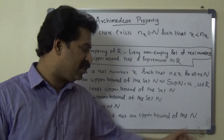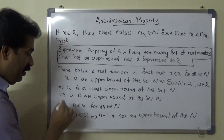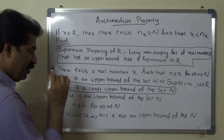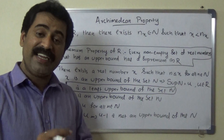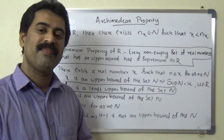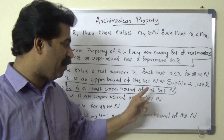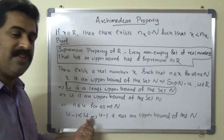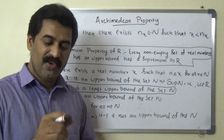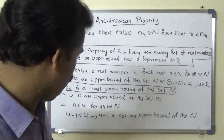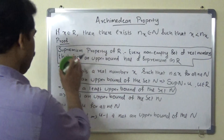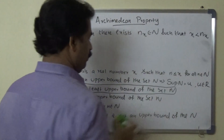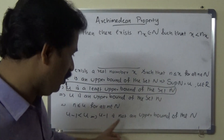Since u minus 1 is not an upper bound of the set capital N, and u is the least upper bound of the set capital N, any real number less than u is not an upper bound of the set capital N. So we write: u minus 1 is not an upper bound of the set capital N.